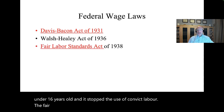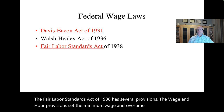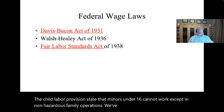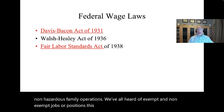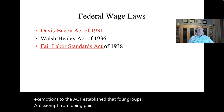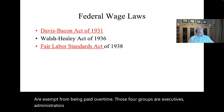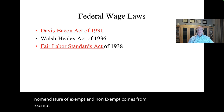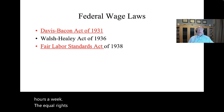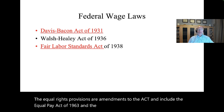The Fair Labor Standards Act of 1938 has several provisions. The wage and hour provisions set the minimum wage and overtime provisions. The child labor provisions state that minors under 16 cannot work except in non-hazardous family operations. Exemptions to the act established that four groups are exempt from being paid overtime: executives, administrators, professionals, and outside salespersons. This is where the nomenclature of exempt and non-exempt comes from. Exempt employees do not have to be paid overtime, while non-exempt employees must be paid overtime for more than 40 hours a week.